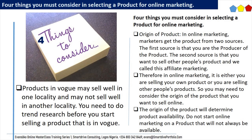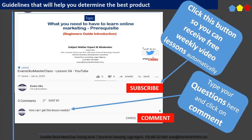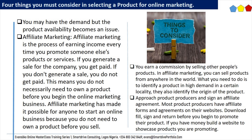Please do this now before the end of this video: click on the red subscribe button below this video and hit the notification bell. This will enable you to receive a copy of our weekly free lecture videos. Thing 2: Affiliate marketing is the process of earning income every time you promote someone else's products or services. If you generate a sale for the company, you get paid. If you don't generate a sale, you do not get paid. This means you do not necessarily need to own a product before you begin the online marketing business. Affiliate marketing has made it possible for anyone to start an online business because you do not need to own a product before you sell.